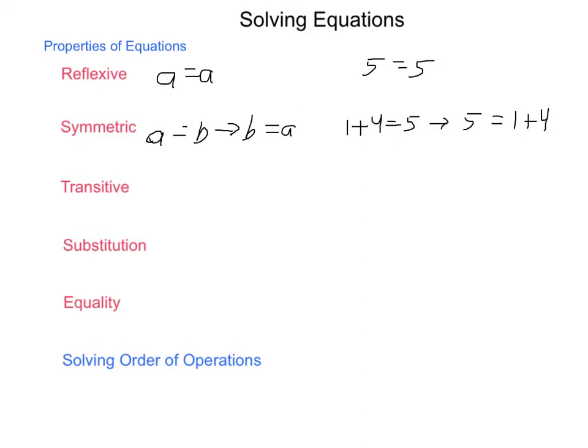Next is the transitive property. Transitive property says that if A equals B, and if B equals C, then it can be concluded that A is equal to C.